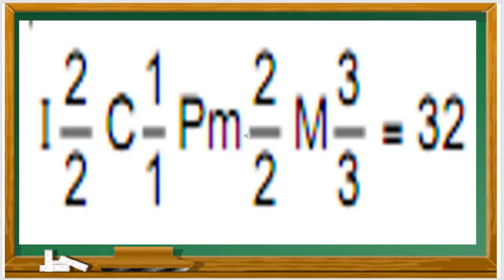That is an assignment for you. I have given a dental formula of an animal. Looking at the formula, you have to say how many incisors, canines, premolars, and molars there are.